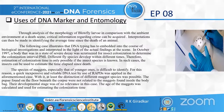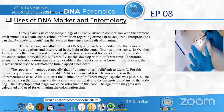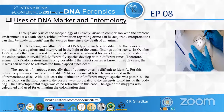Detection of drugs in insects, which is actually a reflection of the cause of death, is possible. The third case is the use of DNA markers in entomology. Through analysis of the morphology of blow-fly larvae in comparison with the ambient environment at a death scene, critical information regarding the crime can be acquired. DNA typing has to be embedded into the course of biological investigation and interpreted in light of the actual findings at the scene.